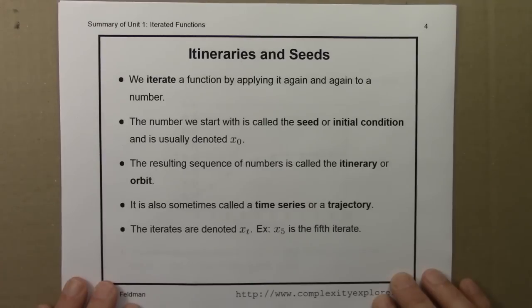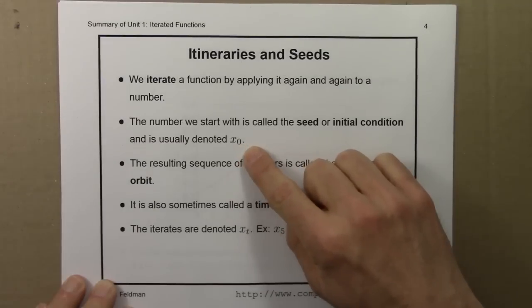We iterate a function by applying it again and again to a number. It's a repetitious process. The number we start with is known as the seed, or the initial condition, and is usually denoted x0 or x sub 0.